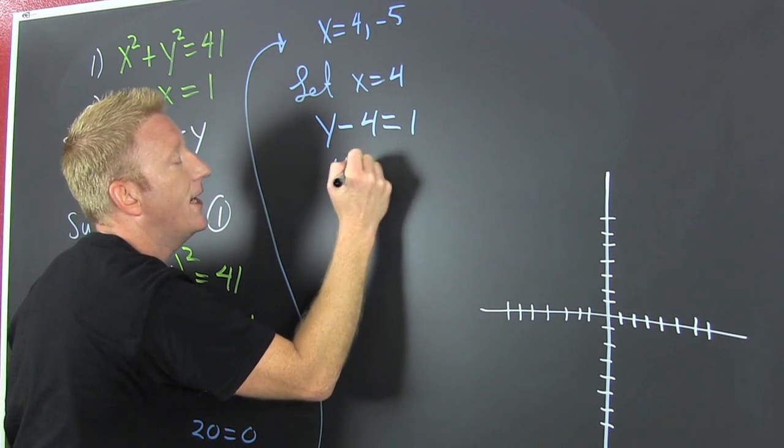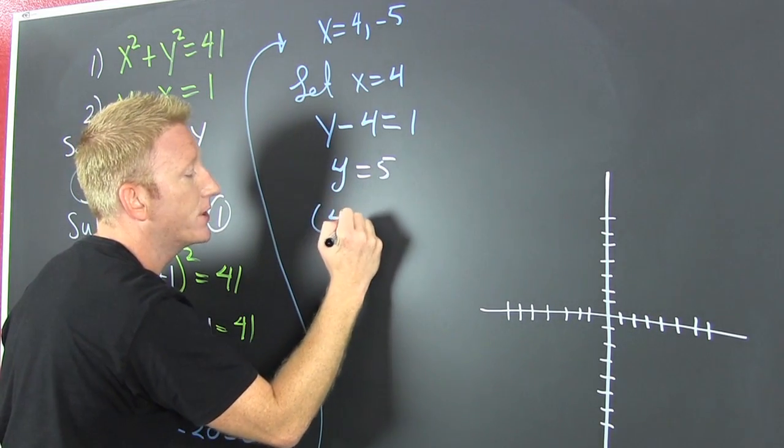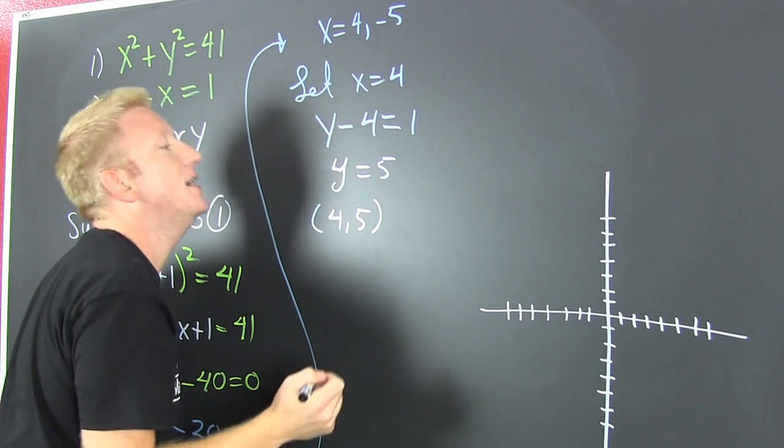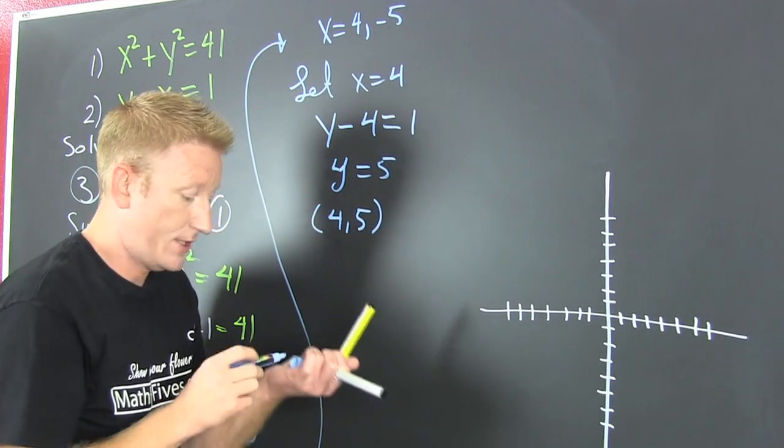So then y is equal to 5. So what does that mean? That means the point 4, 5 is in my solution set. What's next? I'm going to do the other one.